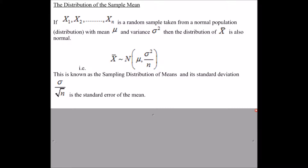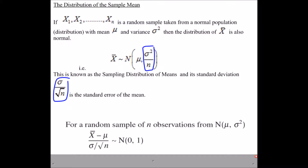To get sigma over root n, we've just square-rooted the variance. In the formula book on page 8, for a random sample of n observations from a normal distribution with mean mu and variance sigma squared, we get: x-bar minus mu, divided by sigma over root n, is a standard normal distribution with mean 0 and standard deviation 1. This is our standardized form given on page 8.